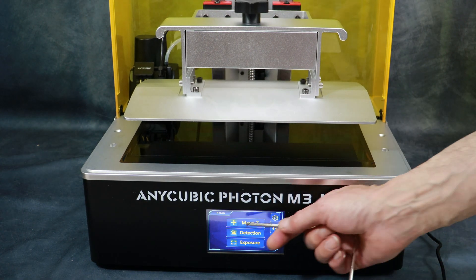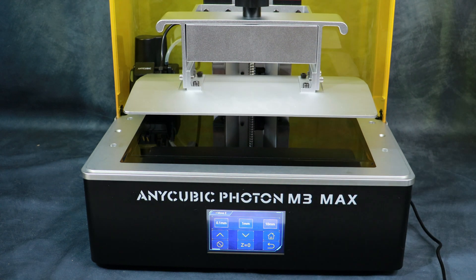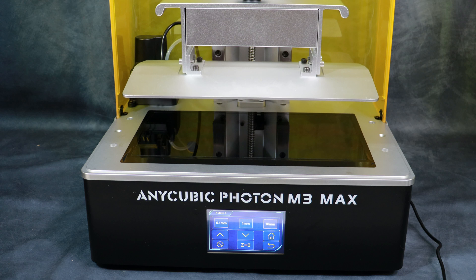Remove the paper, go back into the move Z menu. Hit 10 millimeters and we're going to move the build platform up enough so we can install the resin vat.